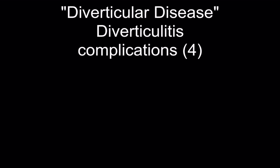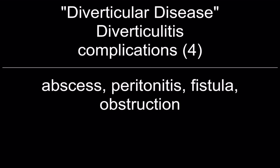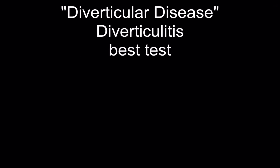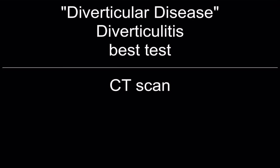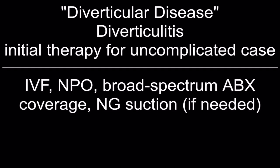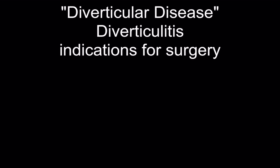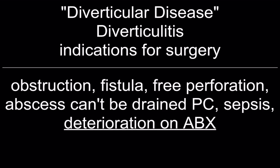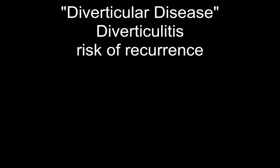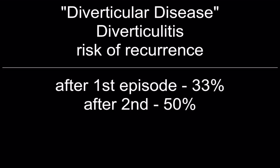Top four complications of diverticulitis: abscess, peritonitis, fistula, obstruction. Initial therapy for uncomplicated cases: IV fluids, nothing by mouth, broad-spectrum antibiotics, and NG suction if needed. Indications for surgery: obstruction, fistula, free perforation, abscess that can't be drained percutaneously, sepsis, and deterioration on antibiotics. Risk of recurrence: 33% after first episode, 50% after second episode.